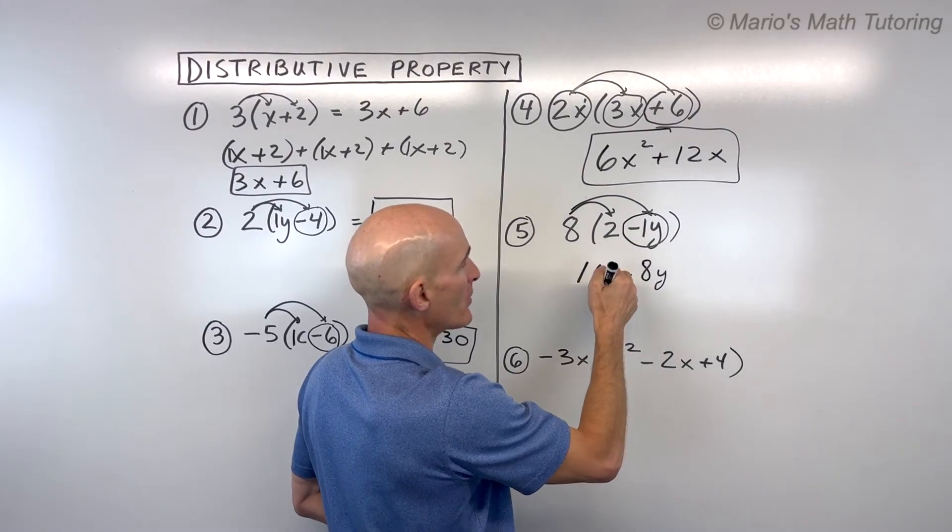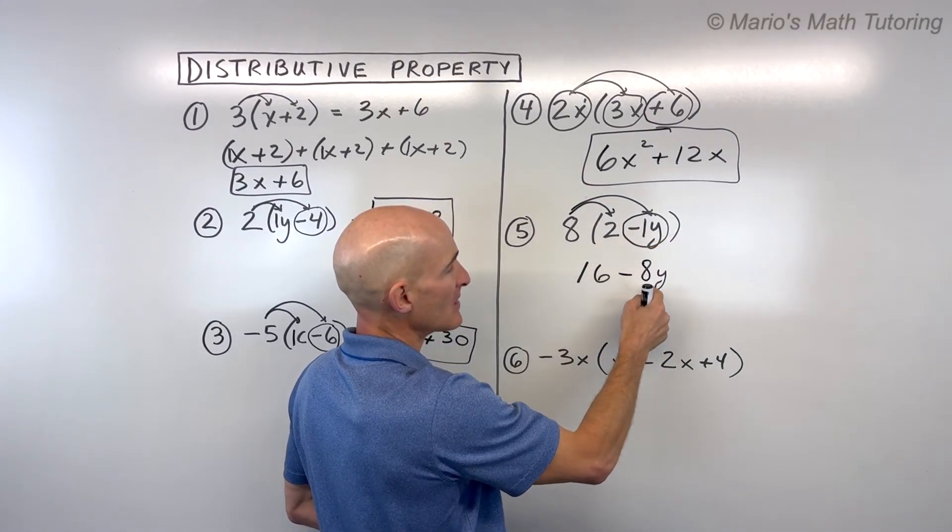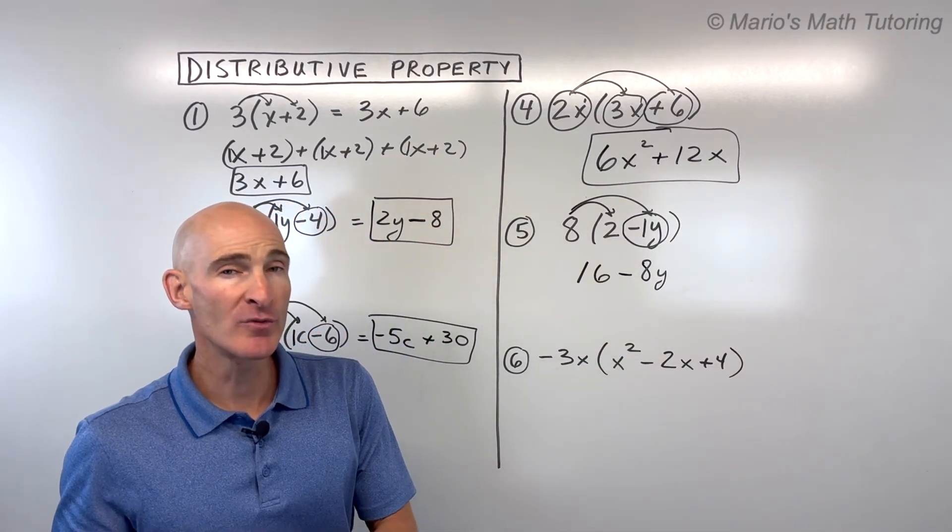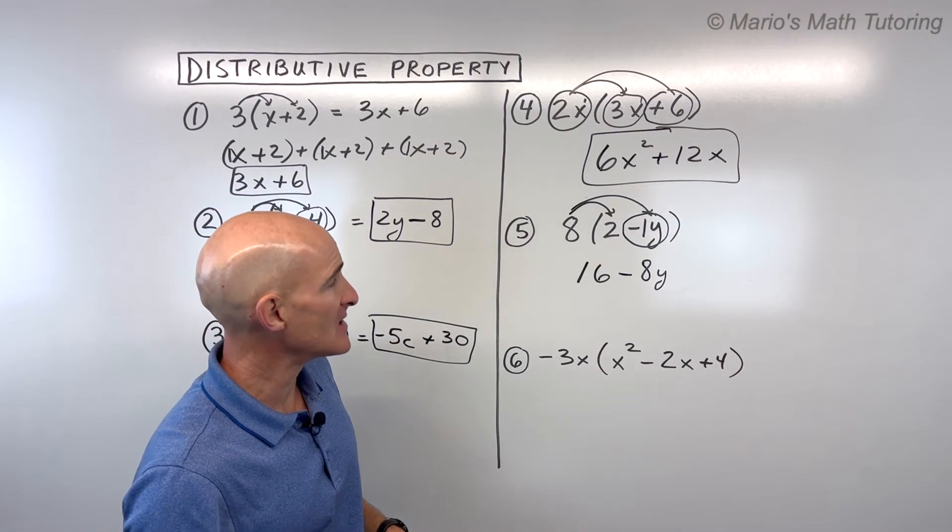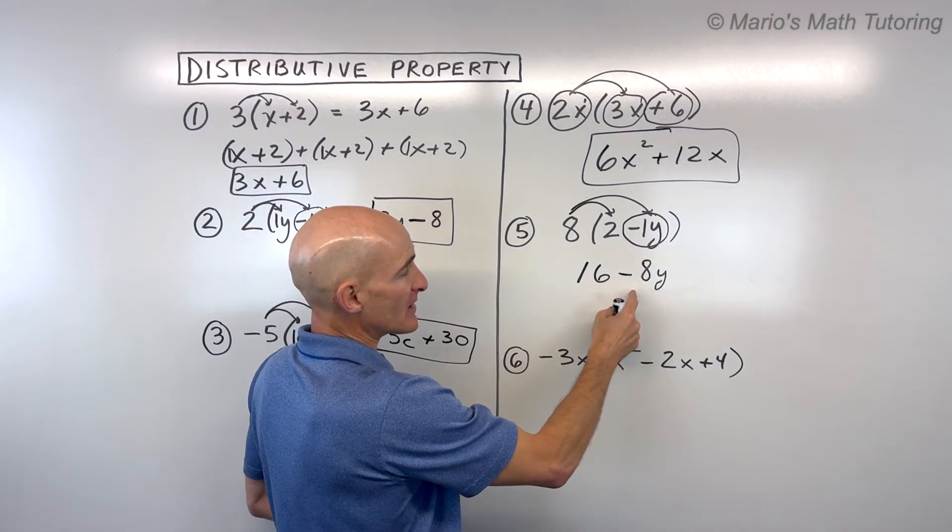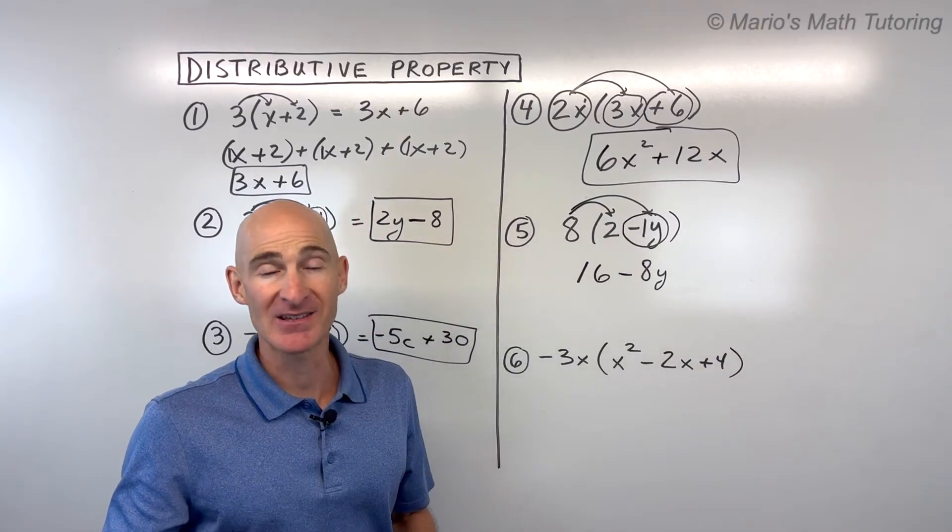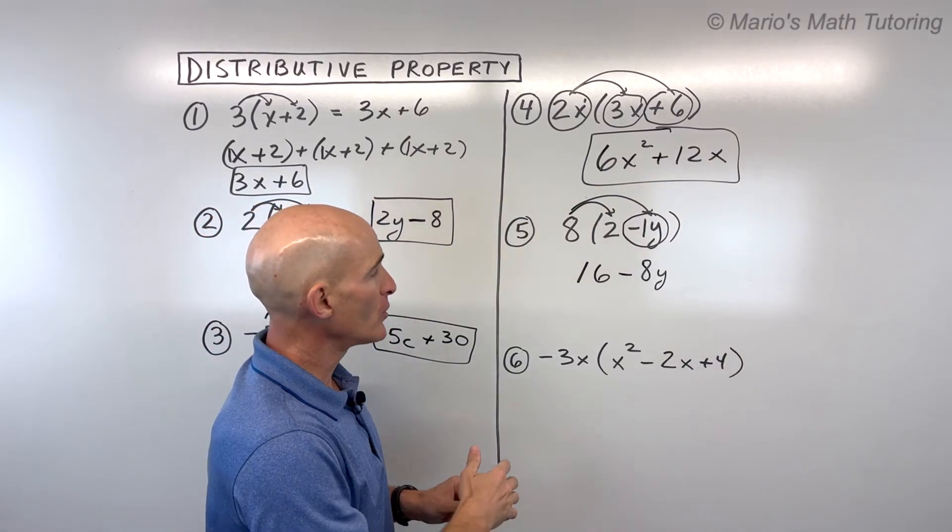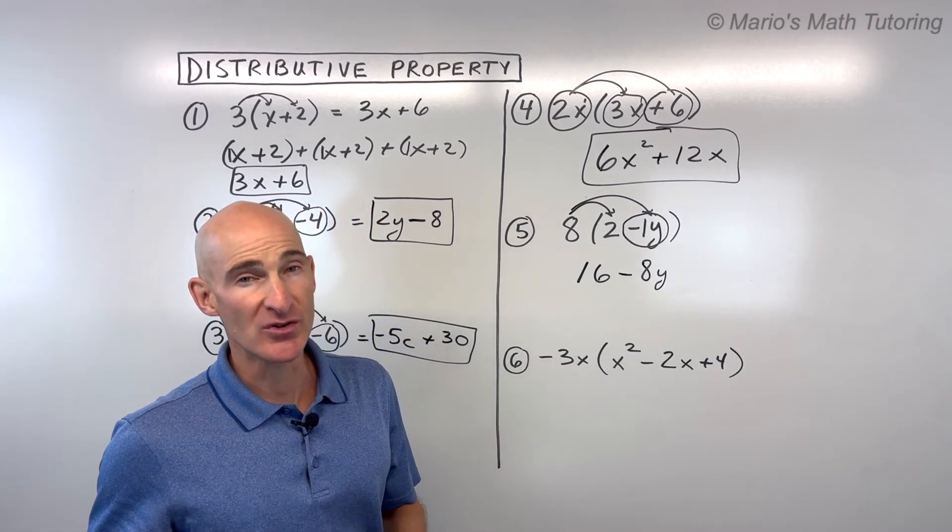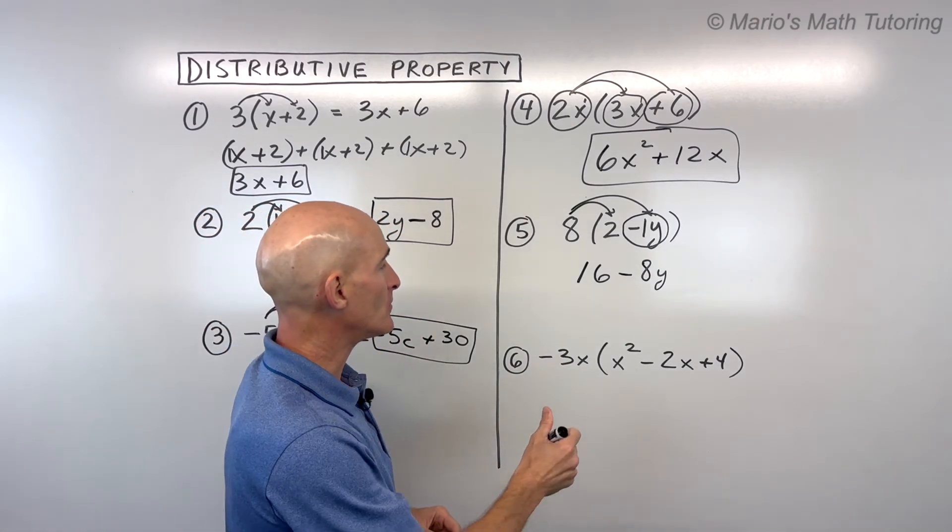And the y comes along with it. So eight times negative 1y is negative 8y, or you can write it just as minus 8y. Another mistake that students sometimes make is they have more than one symbol in between the terms. Like they might have like a minus and a minus or a minus and a plus. You only want one symbol in between. And that's important. So you want to kind of write it as simply as possible.